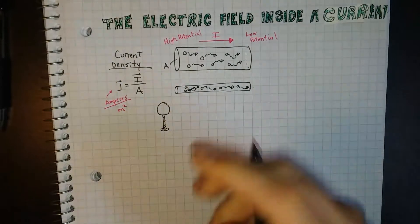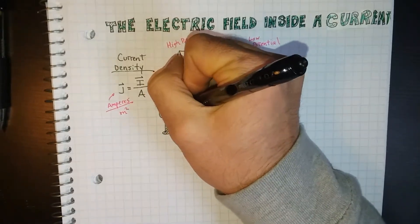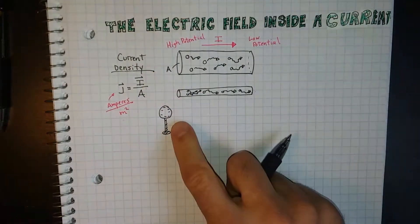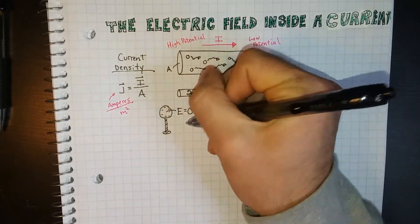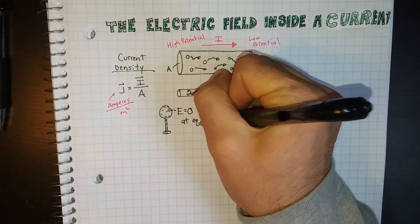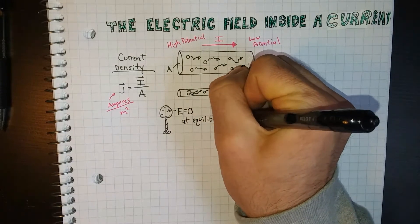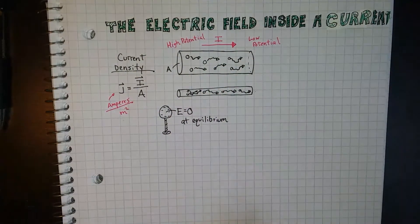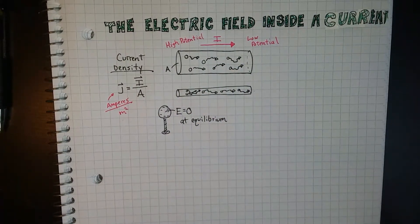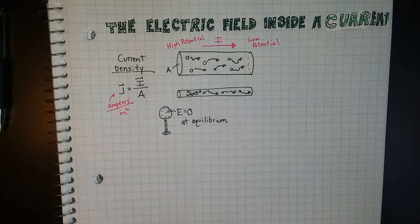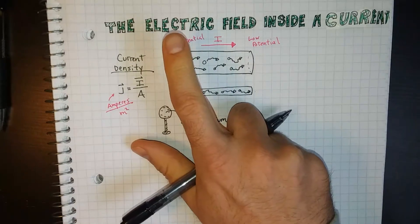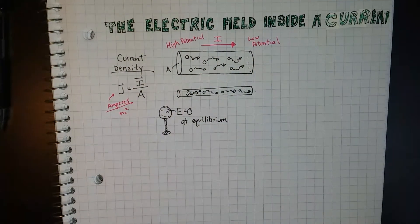...then all the charges that are on here, all these negative charges, have reached equilibrium, and the electric field inside there is zero at equilibrium. The idea here is that this is not equilibrium, that these charges are on their way, they're trying to go to a lower potential. There must be an electric field inside here, because there's a high potential and a low potential.